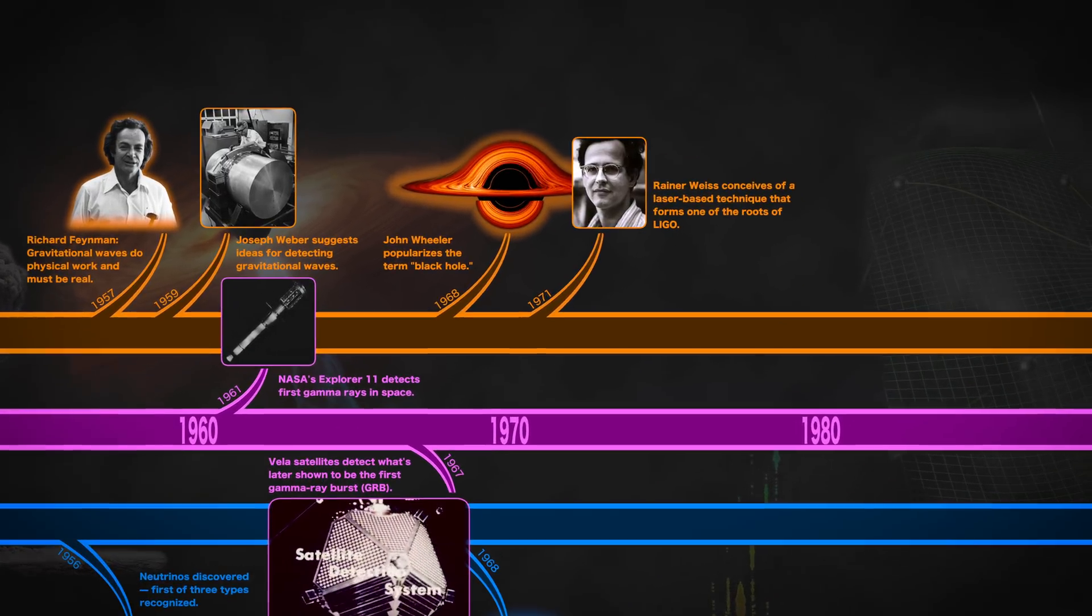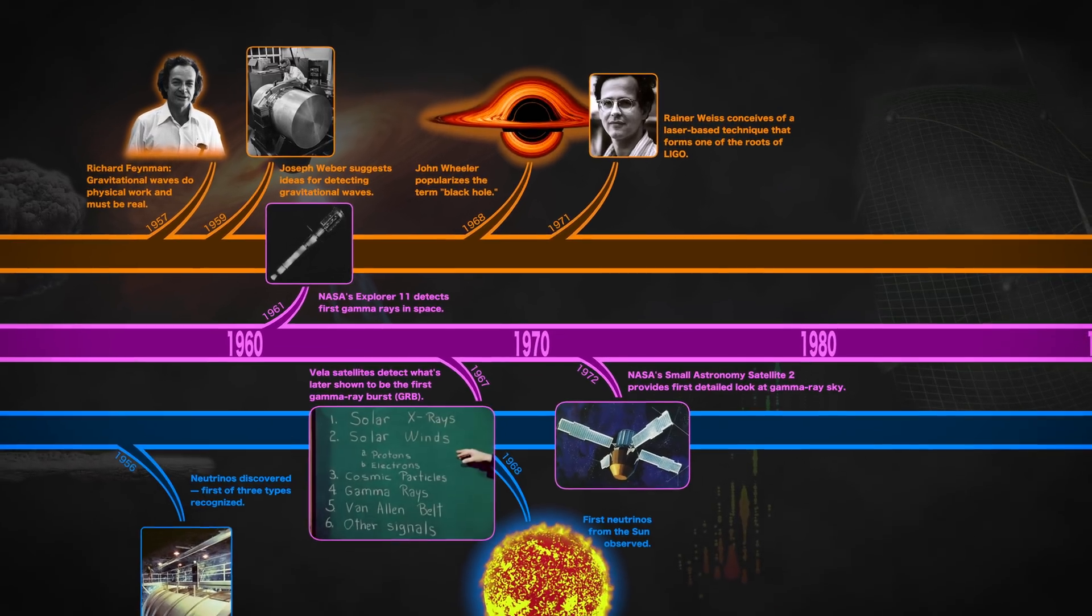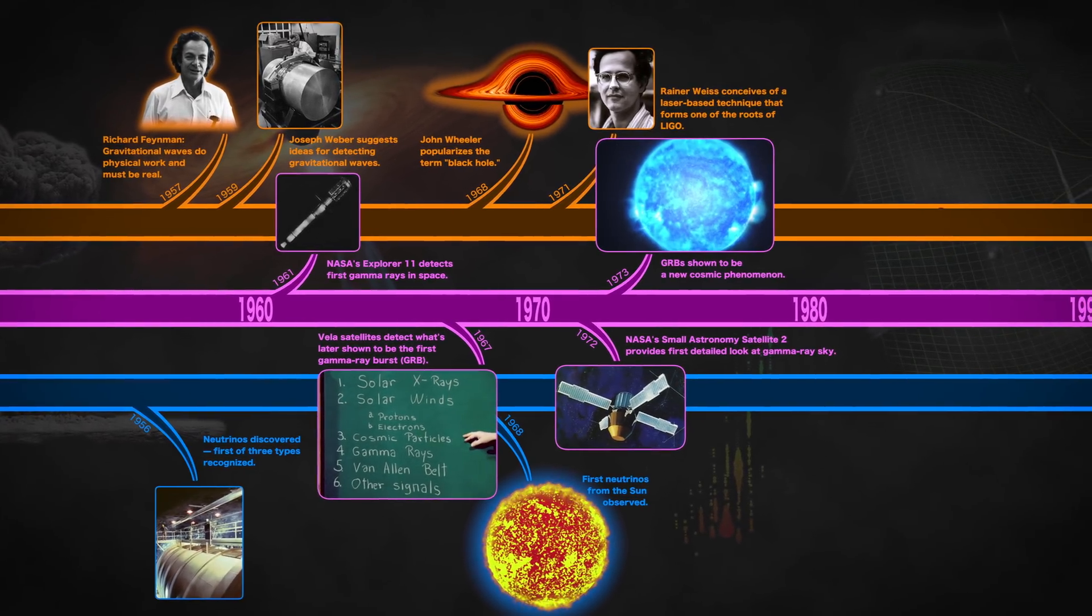In 1971, Rainer Weiss conceived of a way to detect gravitational waves using lasers, one of the roots of LIGO.